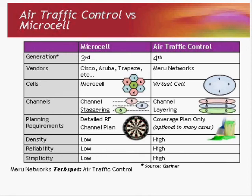Microcell supports low density; air traffic control supports high density. Microcell has low RF reliability; we have high RF reliability — not just because we have layers of coverage everywhere, but because those layers have uniformly higher signal strength, and because of the virtual cell concept, more radios are available to serve a particular client than in Microcell where they're isolated by channels. Microcell is not very simple — it requires knowing a lot about RF to set up correctly. For air traffic control, that's not true — simplicity is generally high. That concludes this segment; thank you for listening.